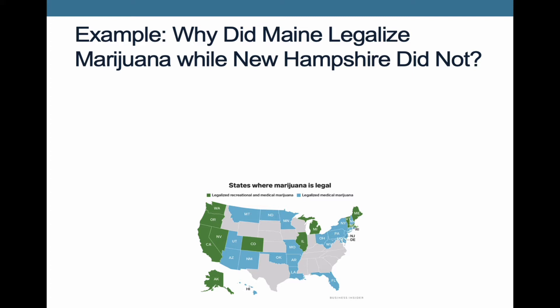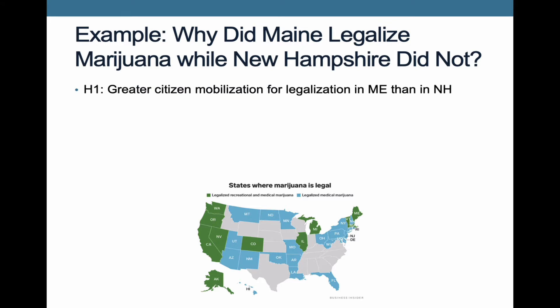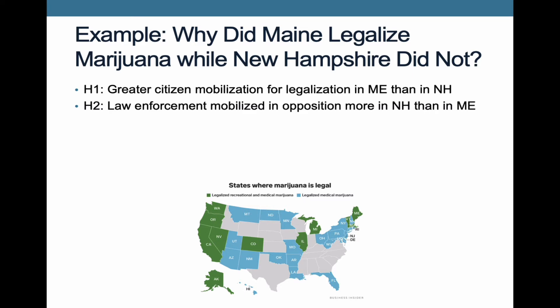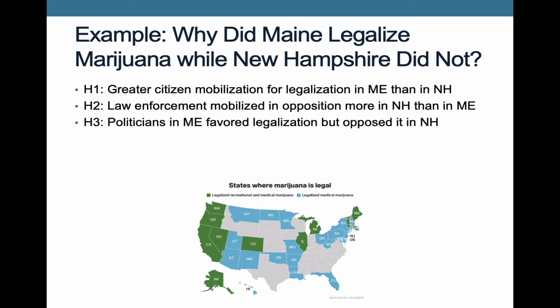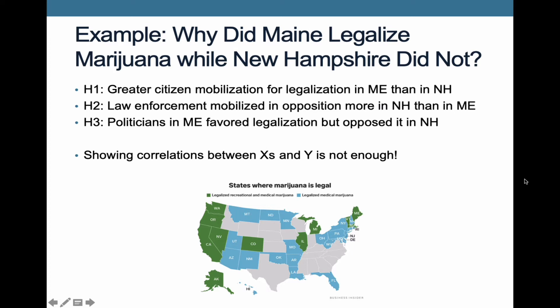Imagine you're thinking up hypotheses to test. The first might be that there was greater citizen mobilization for legalization in Maine than in New Hampshire — maybe a bigger pro-coalition. Alternatively, maybe there was a bigger anti-legalization mobilization in New Hampshire that was strong enough to veto it. Another hypothesis might be that politicians in Maine favored legalization but politicians in New Hampshire opposed it. You develop these hypotheses and they might fit the cases, but just showing the correlation between independent variables and the outcome of legalization is not enough. You need to show that there's a causal process happening — that's what we do with process tracing.